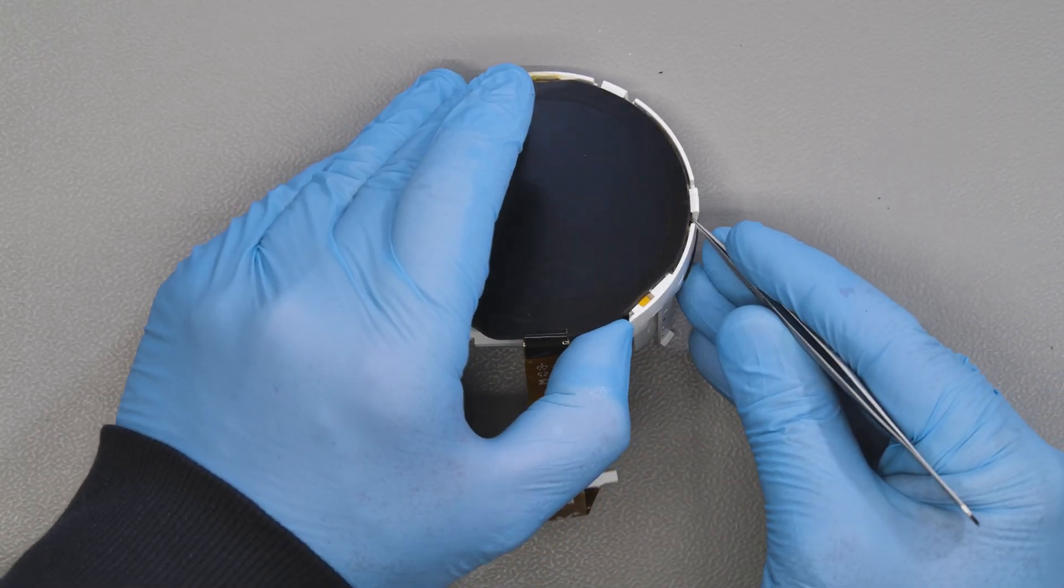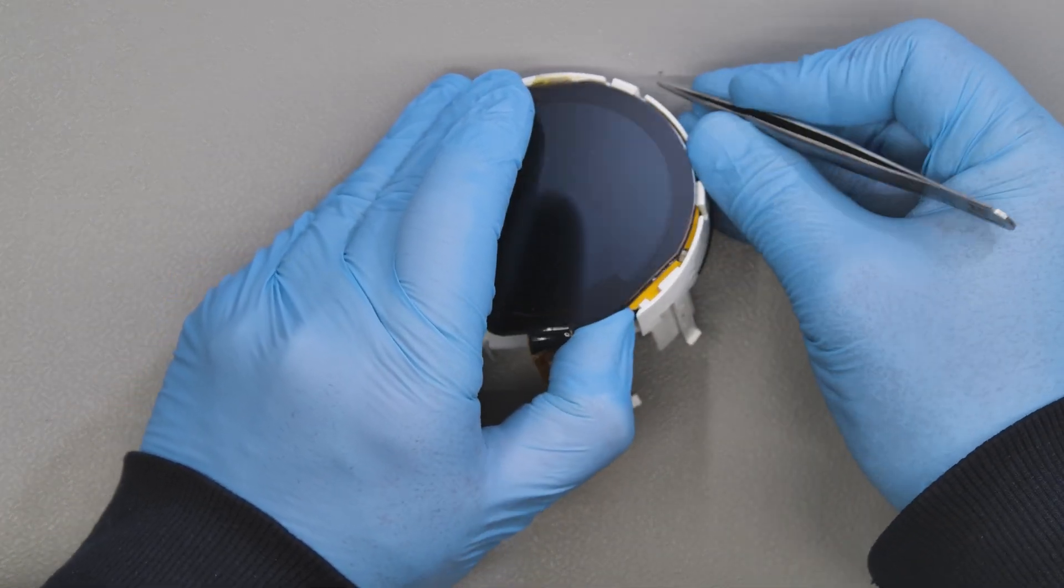With the head of the tweezers, lever on the side clips and remove the original screen.